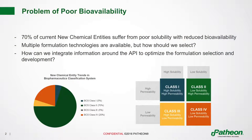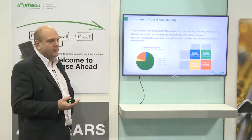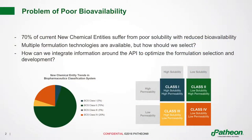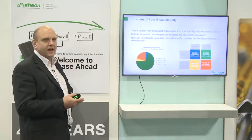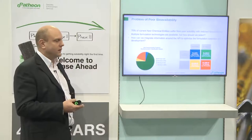First, why do we actually need a lipid formulation? It starts with the problem of poor bioavailability. It is estimated that approximately 70% of current molecules exhibit poor solubility, thereby affecting bioavailability. There are of course multiple formulation options feasible to overcome the bioavailability issue, but one of the challenges companies have is how to select the right formulation moving forward. You would like to link API properties together with formulation properties to make the best selection of a technology available.